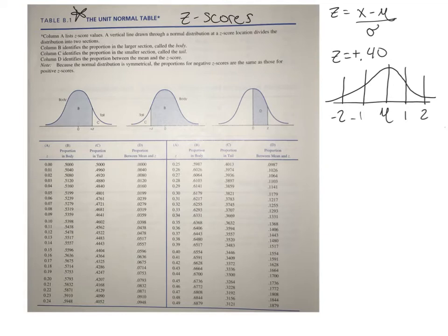What this is going to try to do is find out the proportion or probability of randomly selecting a score that is greater than or less than that z-score.